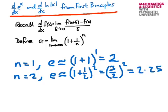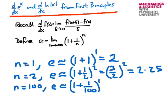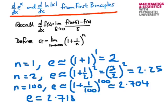We can see this is increasing. For n equals 100, we get approximately 1 plus 1 over 100, all to the power of 100, which works out to approximately 2.704. This is converging extremely slowly toward e, which is approximately 2.71828 and carries on — it has infinitely many non-repeating decimal places. It is an irrational number.